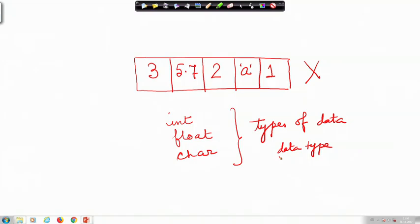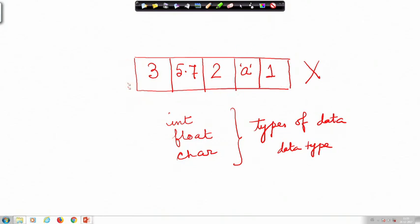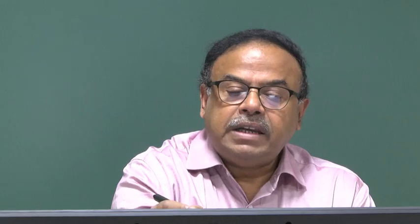So an array is allowed to store data of only one type. We know that int, float, char, all these are defining different types of data or data type. So an array can store data of only one data type, whatever that is. It can be all floating point numbers, it can be all characters, it can be all integers, whatever. So these are two words of caution.